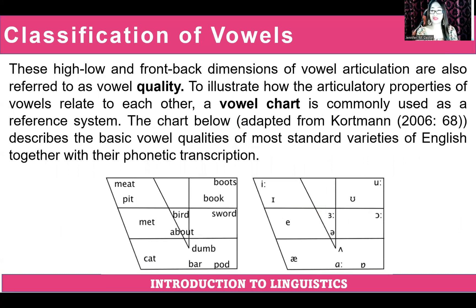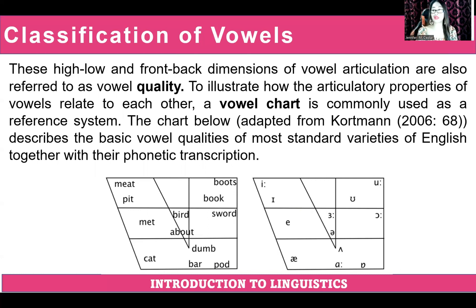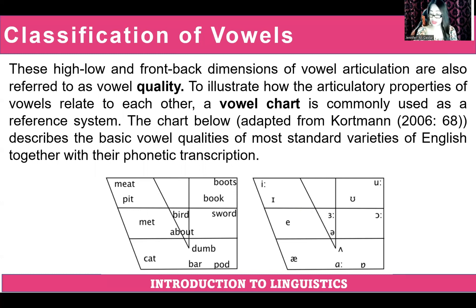These high-low and front-back dimensions of vowel articulation are also referred to as vowel quality. To illustrate how the articulatory properties of vowels relate to each other, a vowel chart is commonly used as a reference system. The chart is adopted from Cortman 2006 and describes the basic qualities of new standard varieties of English together with their phonetic transcription. This is a reinforcement of our prior face-to-face discussion.